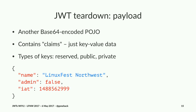Then we have the payload — another base64 encoded POJO — and it contains what the RFC calls 'claims.' Claims is fancy security talk for key-value data pairs you want to represent and transmit. There are three types of keys: reserved keys, public keys, and private keys. Reserved keys are specified in the spec. Public keys would be registered with IANA. And the most commonly used type are private keys — ones you just make up.